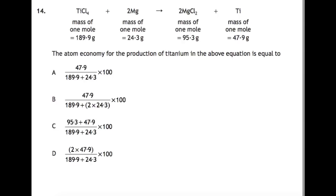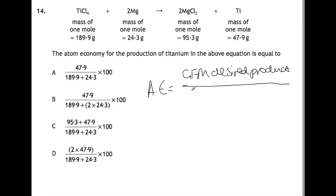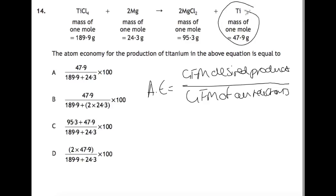For atom economy, you'll find the equation at the front of your data book. The equation is: GFM of desired product divided by the GFM of all reactants. In this case, our desired product is titanium, so C and D are not correct. We want the mass of all products, which is 189.9 plus 2 times 243. So our answer is B.